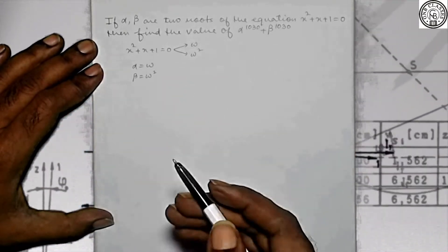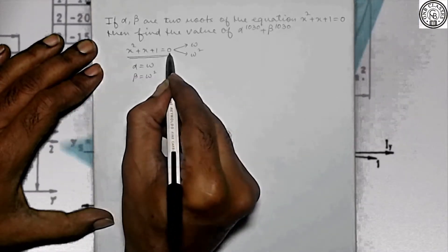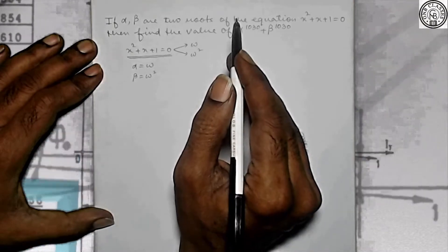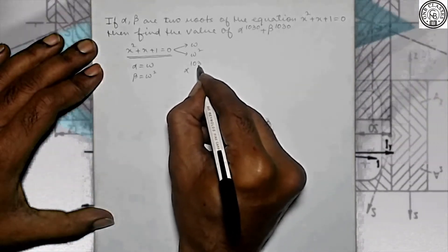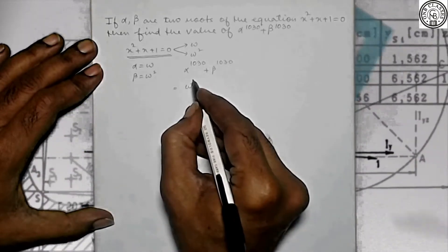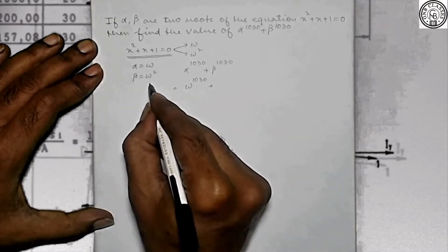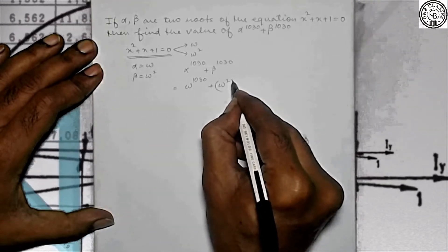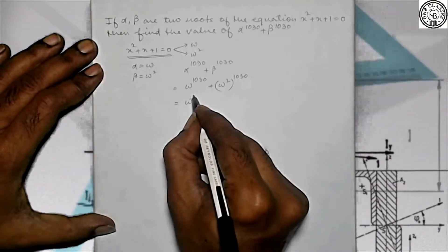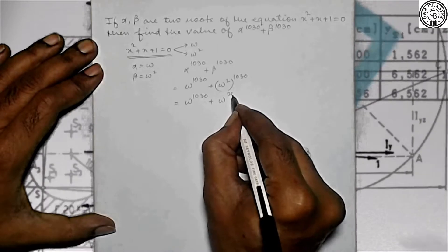See how quickly this sum gets solved, only if you can remember that the two roots of the equation x² + x + 1 are omega and omega square. Therefore, in place of alpha you put omega and in place of beta you put omega square. So it becomes omega to the power 1030 plus omega to the power 2060.